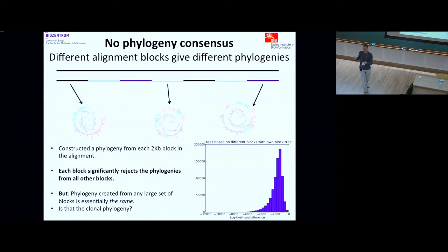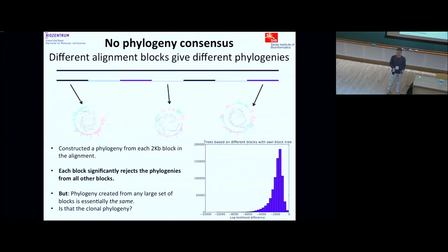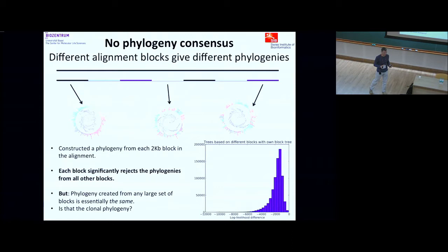The data says the phylogeny in every block is different. However, if I take any 100 blocks from the 3,000 and put them together to make a tree, I basically always get the same tree. Any one block gives a different tree, but if I take any sufficiently large group of blocks I get pretty much the same tree. The more blocks you use, the closer it gets to the final tree.